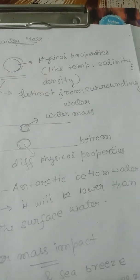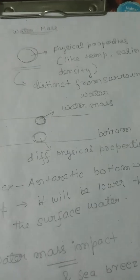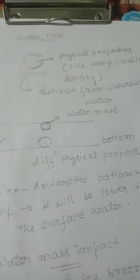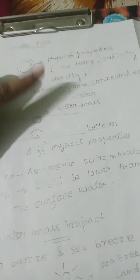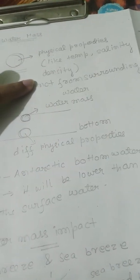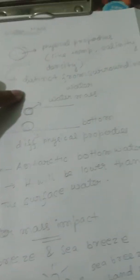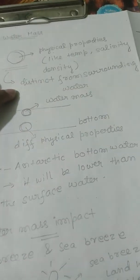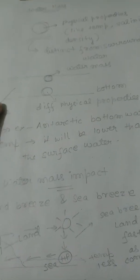salinity, and density distinct from surrounding water. So suppose we take this as a water mass—it has physical properties like temperature, salinity, and density that are distinct or different from the surrounding water.